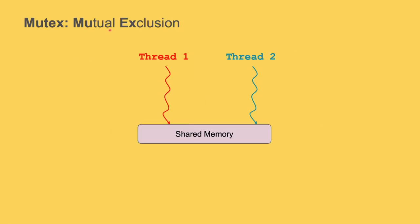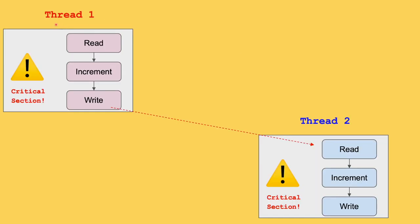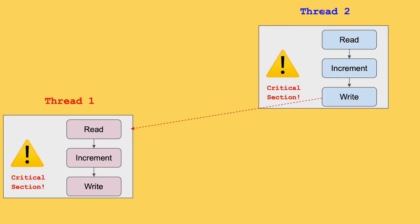Mutex stands for mutual exclusion. The idea is to protect shared memory with a critical section, and only one thread can enter this section at all times. Either thread one has access to shared memory and thread two has to wait, or thread two accesses it and thread one waits — but not both. The increment operation — read, increment, write — can now happen in series for one thread without worrying about the other.